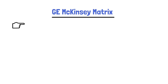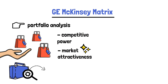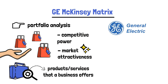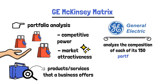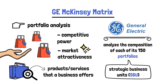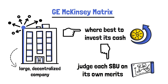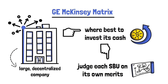The GE McKinsey Matrix is fundamentally a portfolio analysis. It compares groups of products with their competitive power and market attractiveness. The portfolios themselves comprise the full suite of products or services that a business offers to the market. In the context of General Electric, the matrix was created so that the company could analyze the composition of each of its 150 portfolios, otherwise known as Strategic Business Units (SBUs). Ultimately, the GE McKinsey Matrix allows a large, decentralized company to determine where best to invest its cash, judging each SBU on its own merits according to metrics which determine future viability.